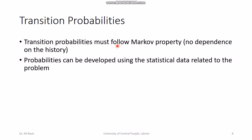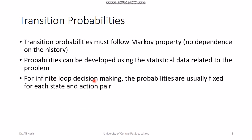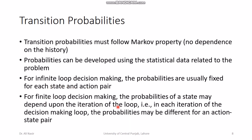I will also talk in future about how to convert a history-dependent problem into a Markov problem, because many problems are convertible. The only restriction in using Markov processes is computational power. Since computers are much stronger now than a few years ago, Markov processes are more relevant today. The process was developed in 1957 by Bellman, but at that time it was hard to implement due to lack of computational power. Probabilities can be developed using statistical data, and for infinite horizon they are usually fixed, while for finite horizon they may vary per iteration.